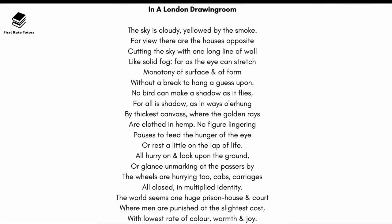Let's go over the title to begin with: 'In a London Drawing Room.' This poem describes the speaker's view from their drawing room. Contextually, George Eliot wrote this in 1865, describing Victorian London. A drawing room was usually a really nice living room in a very large mansion, so even from the title, the social status of the speaker is indicated — they're definitely upper class, viewing things from that perspective.